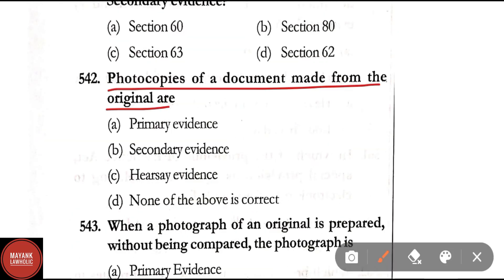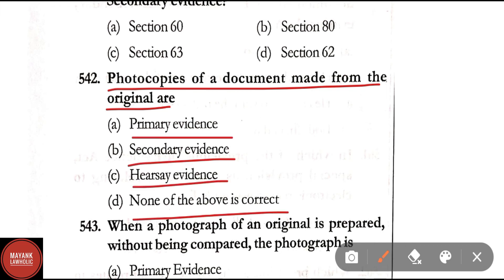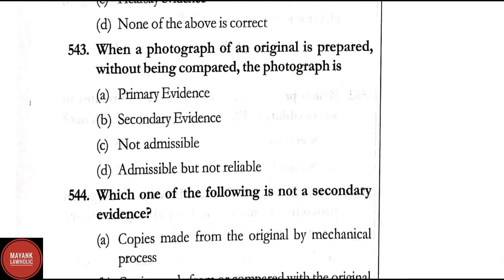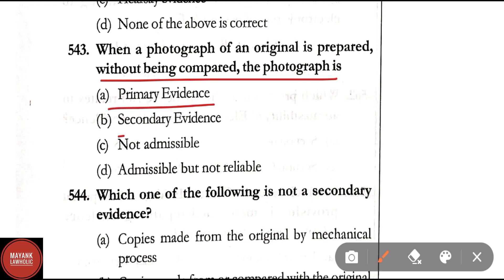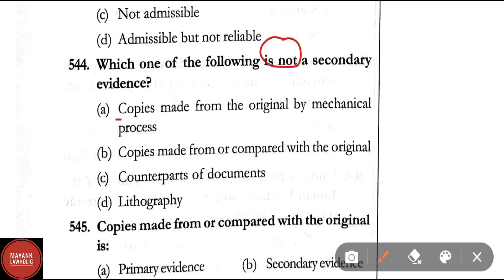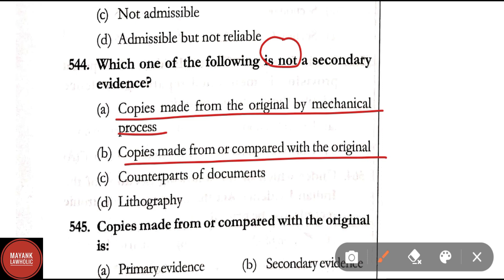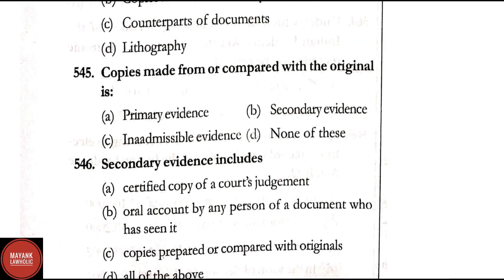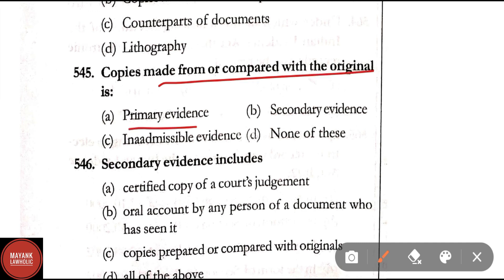Question 542: Photocopies of a document made from the original are — primary evidence, secondary evidence, hearsay evidence, or none of the above. Correct answer is Option B — secondary evidence. Question 543: When a photograph of an original is prepared without being compared, the photograph is — primary evidence, secondary evidence, not admissible, or admissible but not reliable. Correct answer is Option B — secondary evidence. Question 544: Which one among the following is not secondary evidence — copies made from the original by mechanical process, copies made from or compared with the original, counterparts of documents, or lithography? Correct answer is Option D — lithography is not secondary evidence.